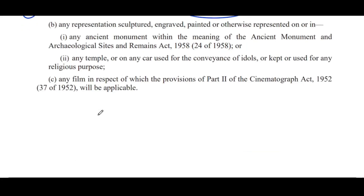Second exception (b): any representation sculptured, engraved, painted or otherwise represented on or in any ancient monument within the meaning of the Ancient Monument, Archaeological Sites and Remains Act 1958, or any temple or any car used for the conveyance of idols, or kept or used for any religious purpose — prohibition does not apply. For example, temples like Khajuraho.